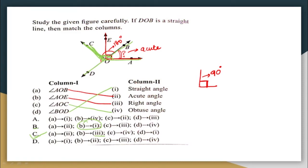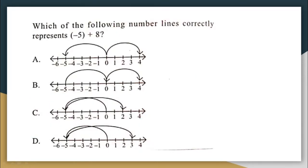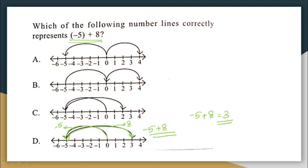Which of the following number lines correctly represents minus 5 plus 8? Looking at option B: from 0 to minus 5 represents minus 5, and then from minus 5 moving 8 points forward reaches 3. So minus 5 plus 8 equals 3. We go from 0 to minus 5, then add 8, and get the answer 3. The correct answer option is option D.